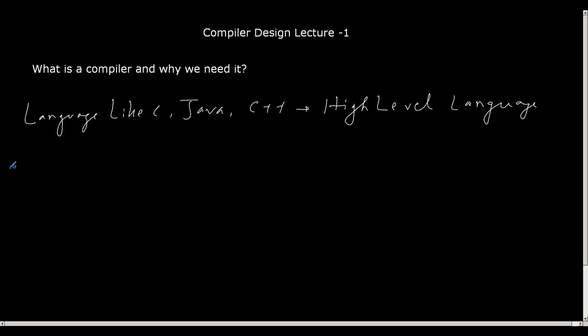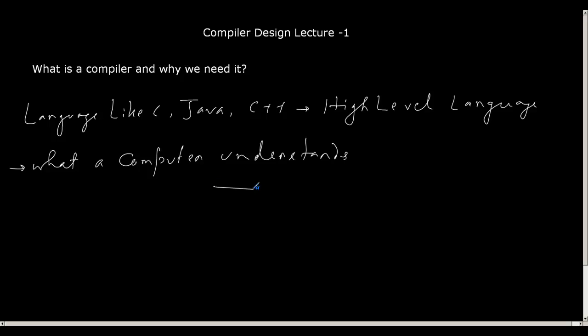So what does a computer understand? The next question is: what a computer understands is what you call as a machine code or a machine-level language. What a computer understands is called machine code. The computer or a processor only understands zeros and ones. Since everything is digital in this digital world, a computer only understands languages in terms of zeros and ones.